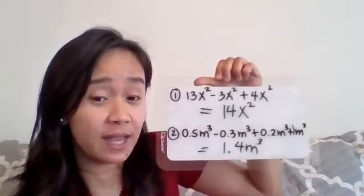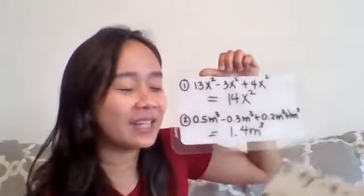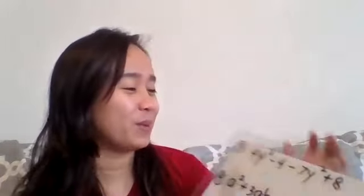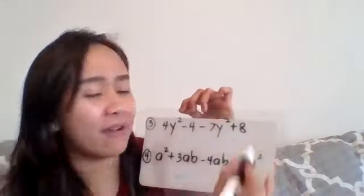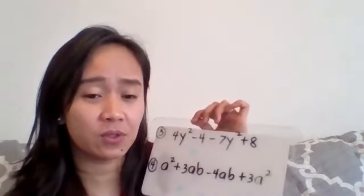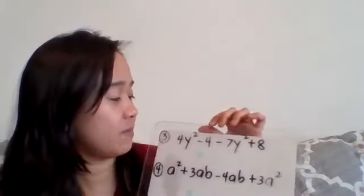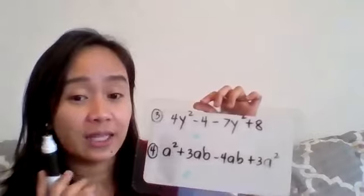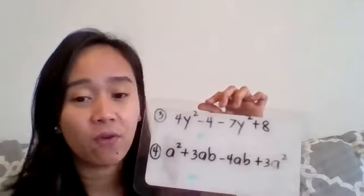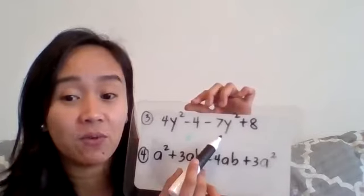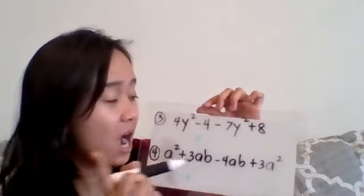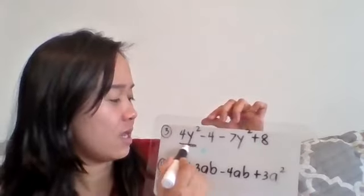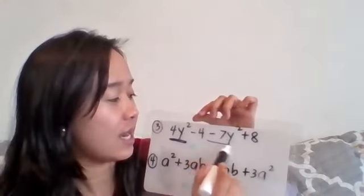So let's have another example. What happens if you have different terms or everything is not the same term? Let's check first. Number three, you have there 4y² - 4 - 7y² + 8.